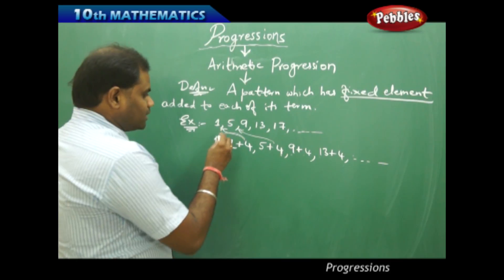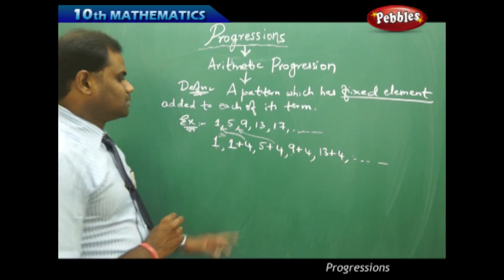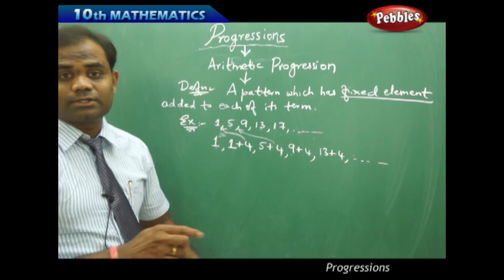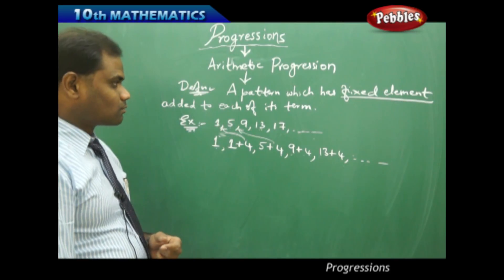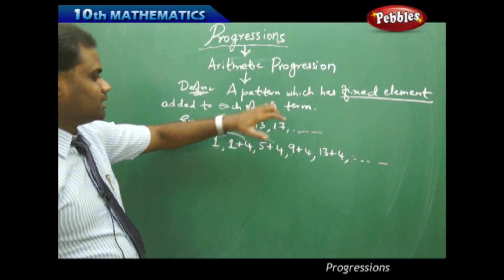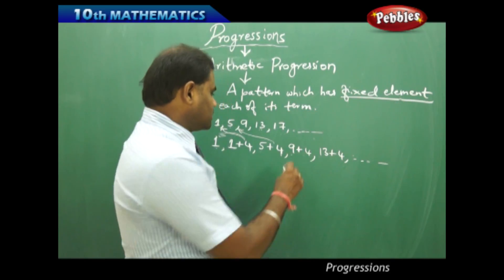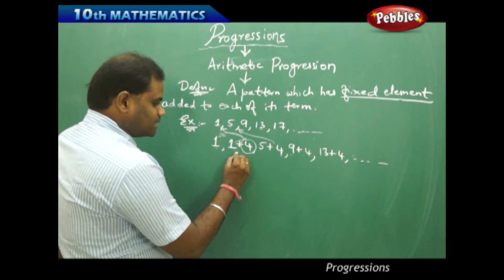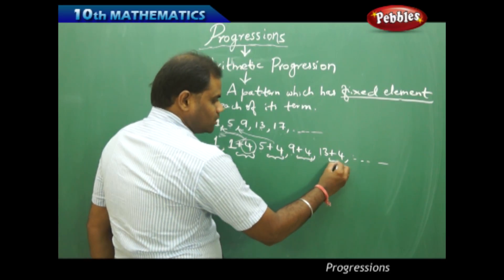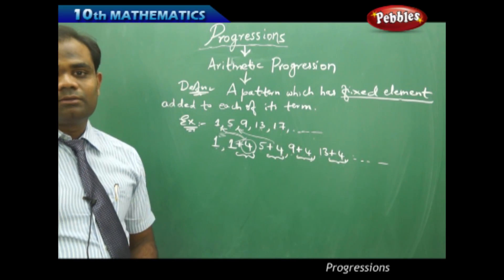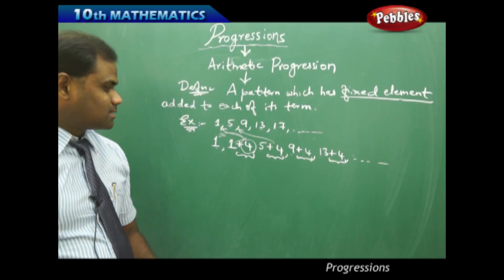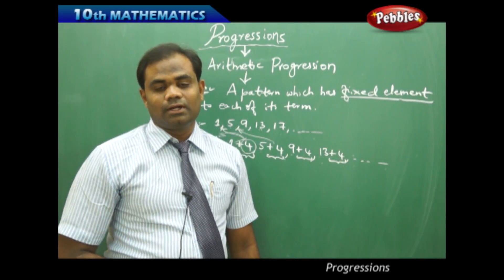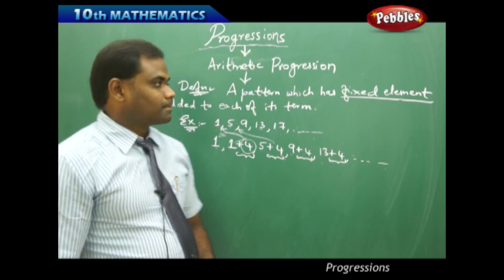Every element is obtained by adding 4 to the previous term: 5 plus 4 gives 9, 9 plus 4 gives 13, 13 plus 4 gives 17, 17 plus 4 gives 21, and 21 plus 4 gives 25. This strictly follows the definition that this is a pattern which has a fixed element — 4 — added to each of its terms. Therefore, this kind of sequence where a fixed element is added to each of the terms is called an arithmetic progression.